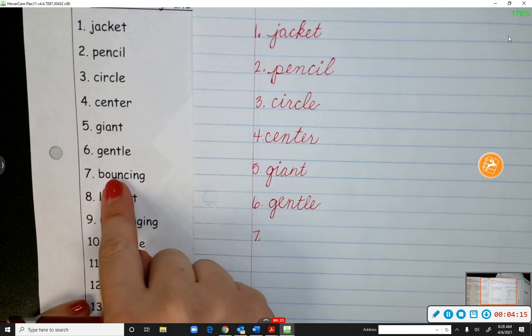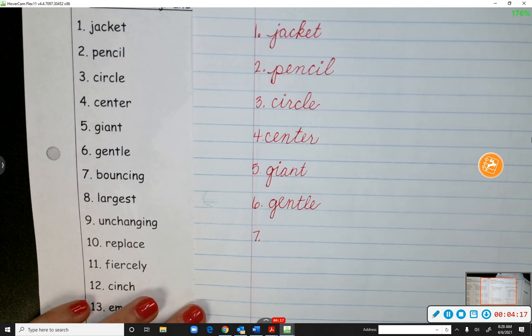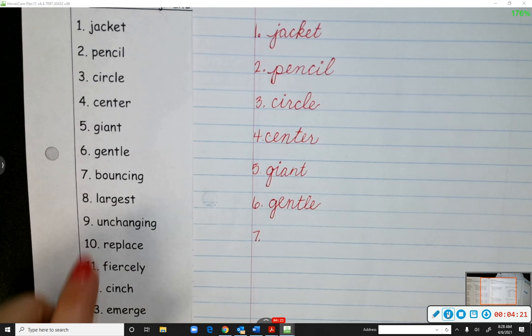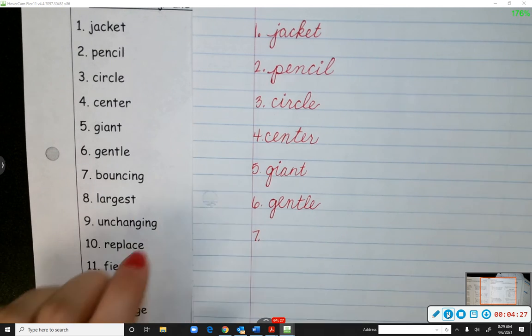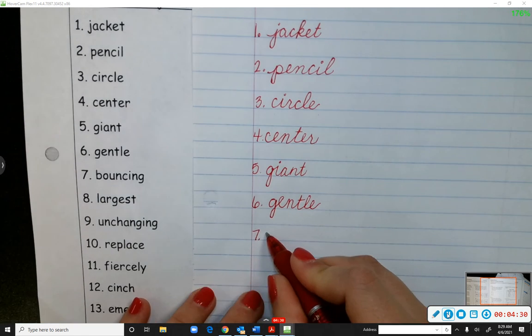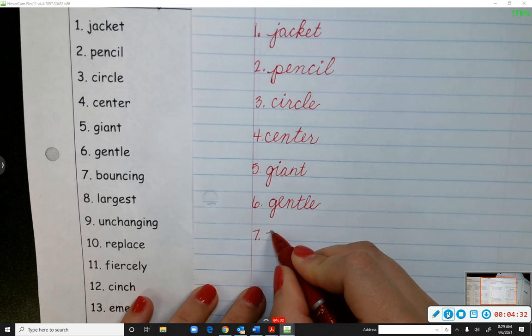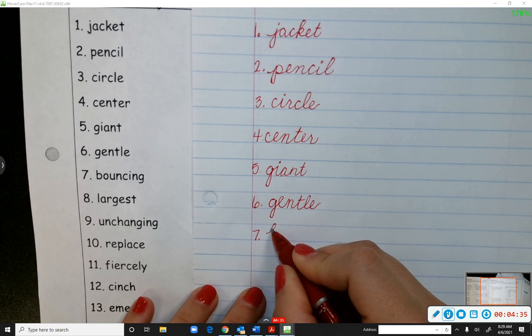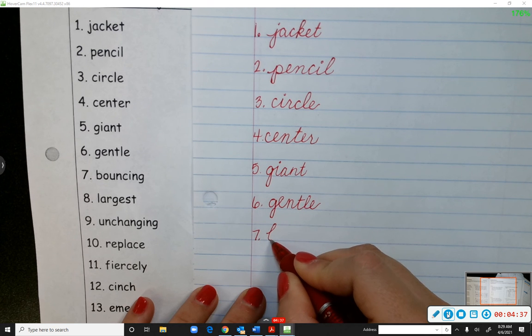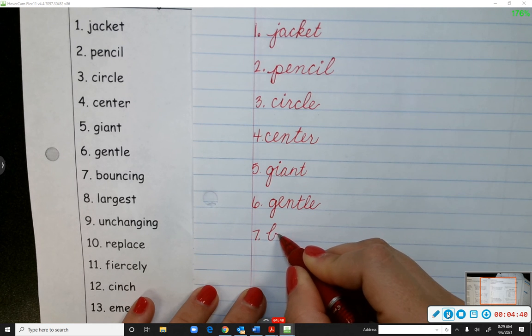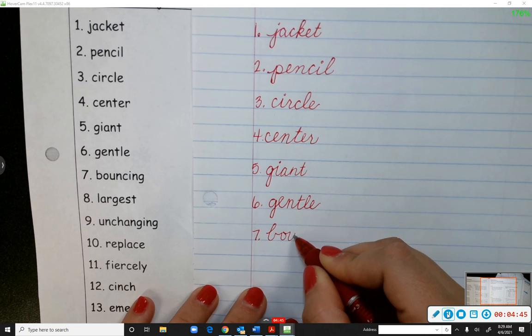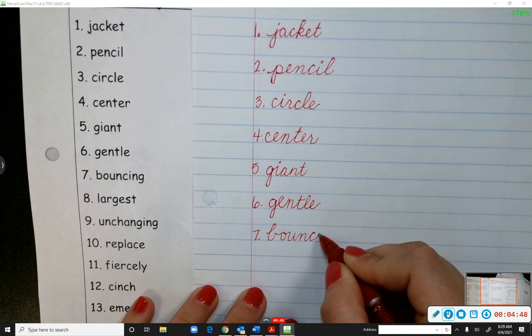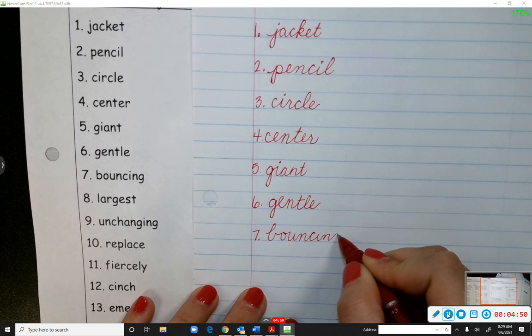Number seven, bouncing. Okay, the next word is what? How do we pronounce this? Bouncing. Okay. So the B, we start kind of in the middle of the line and we make a tiny little loop towards the front. Okay, we come down, make a little handle towards the O, and now we make our O. U, N, C, I, N, G.